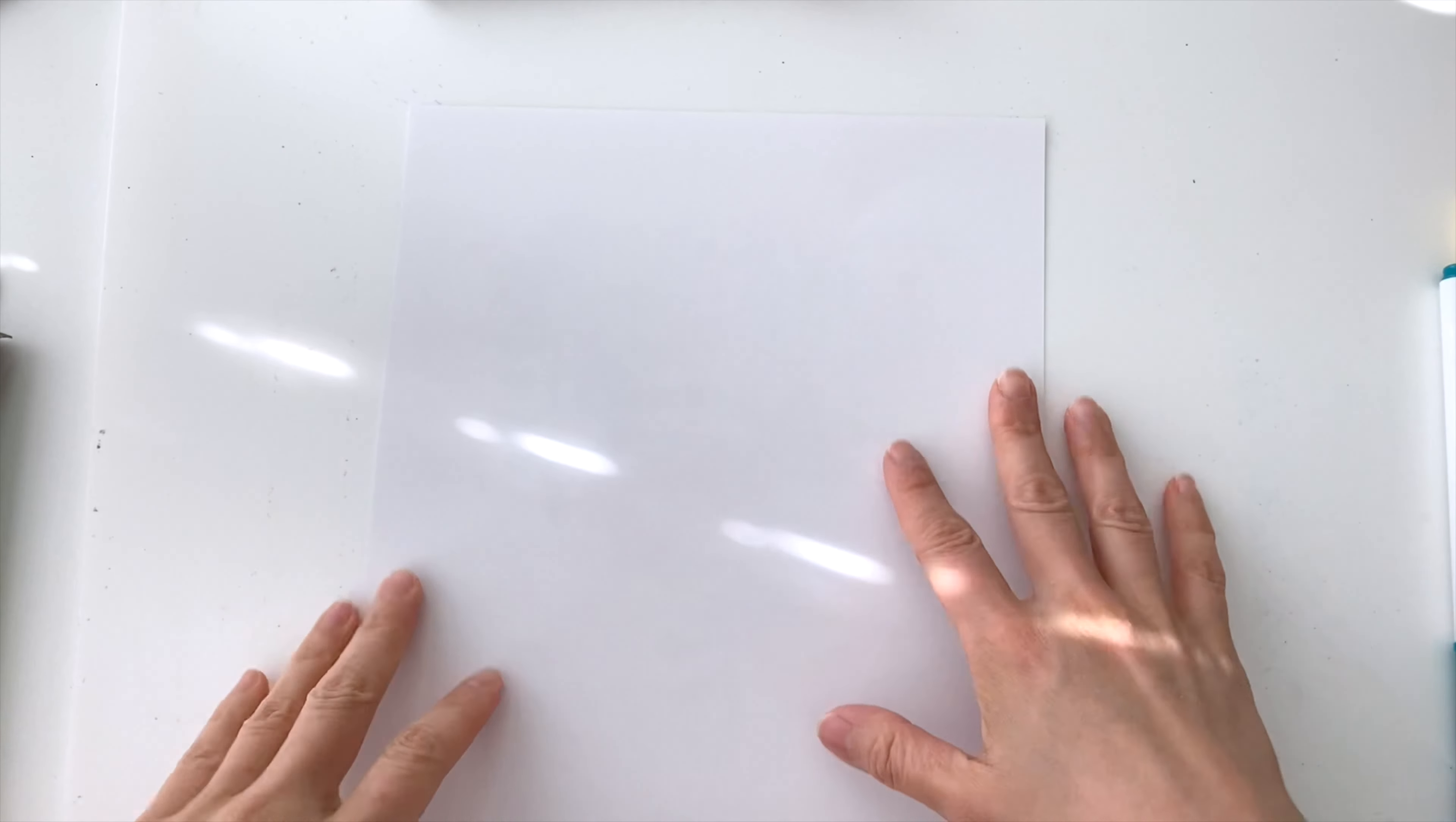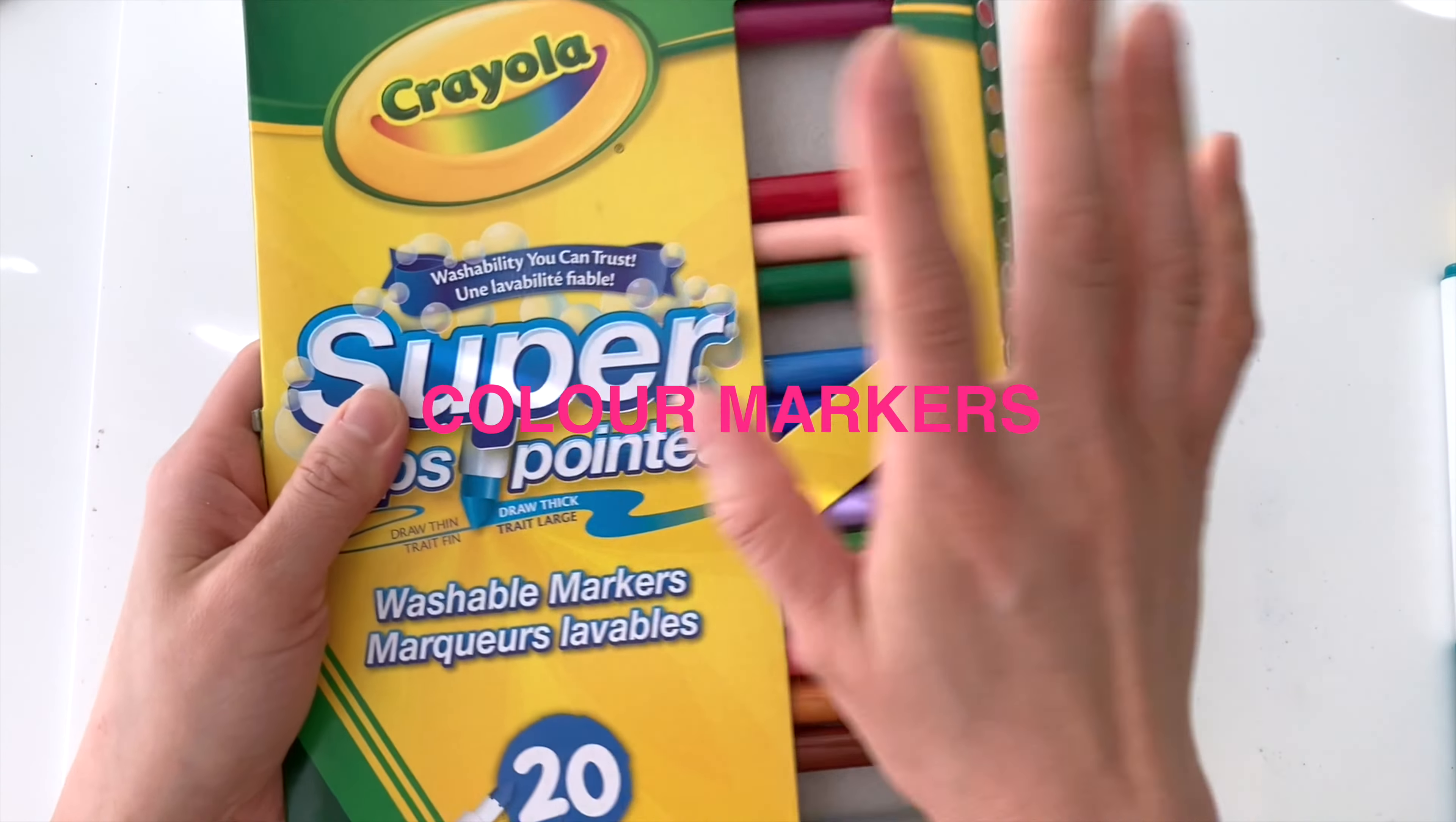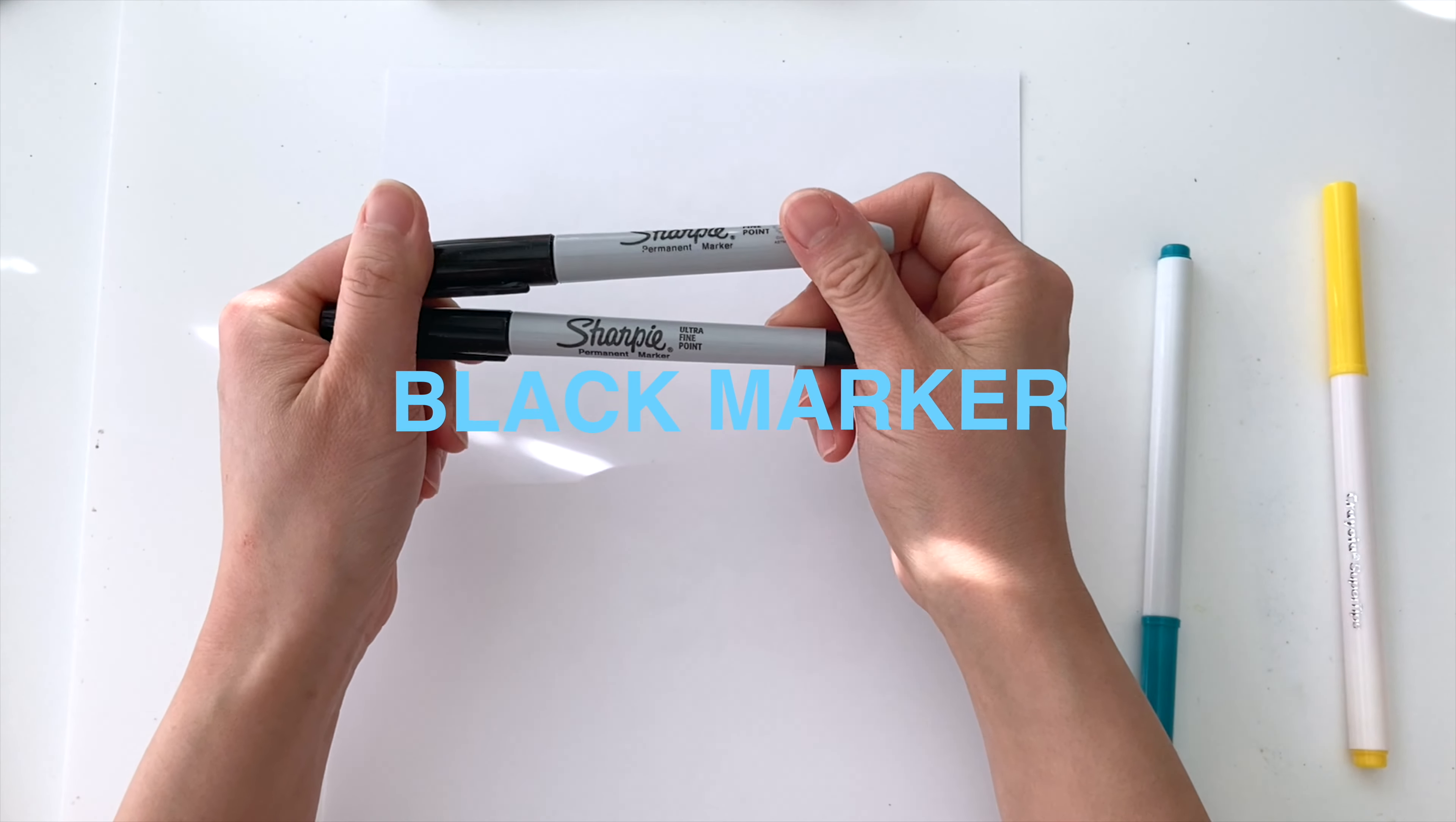Hello everyone, welcome back to Drawing for Kids. To start off, let's go over what materials you need. You need some Crayola markers, which you can use any color markers that you like. Next, you also need some paper, and in addition to that, you'll need some black markers such as Sharpies.